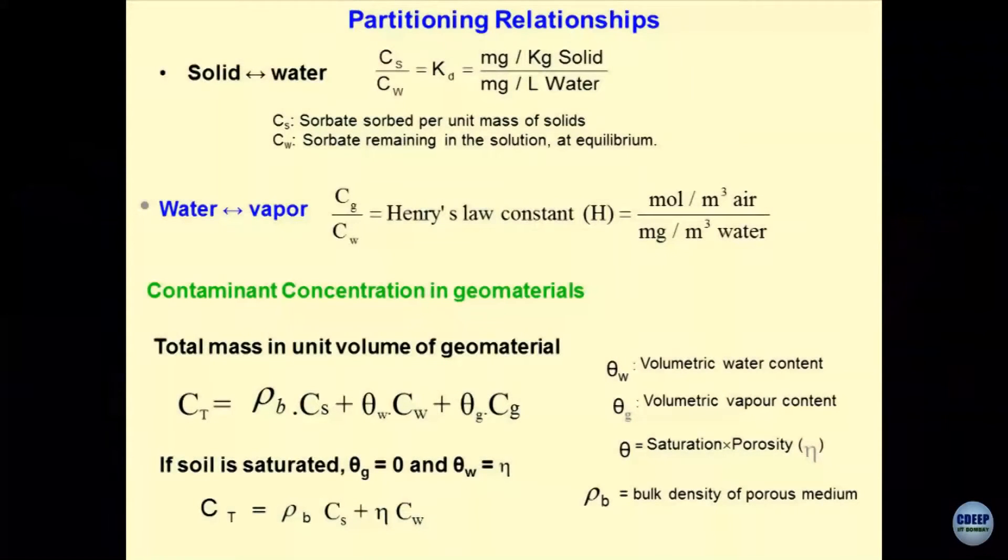So, partitioning relationships. Partitioning could happen from solid to water phase in saturated soils where pores are filled up with water. Cs is the concentration retained on the solids, Cw is the concentration of the contaminant which remains in water.